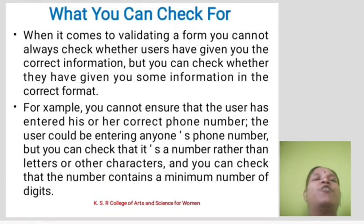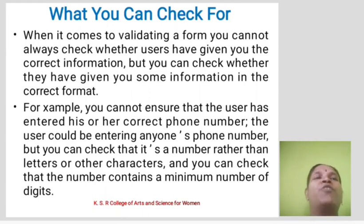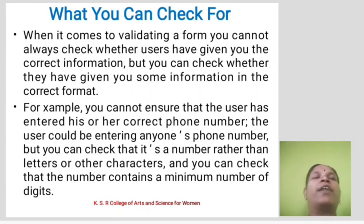What can you check for? When validating a form, you cannot always check whether users have given you correct information, but you can check whether they have given you information in the correct format. For example, you cannot ensure that the user entered his or her correct phone number — the user could enter anyone's phone number — but you can check that it contains numbers rather than letters or other characters, and that the number contains a minimum number of digits.